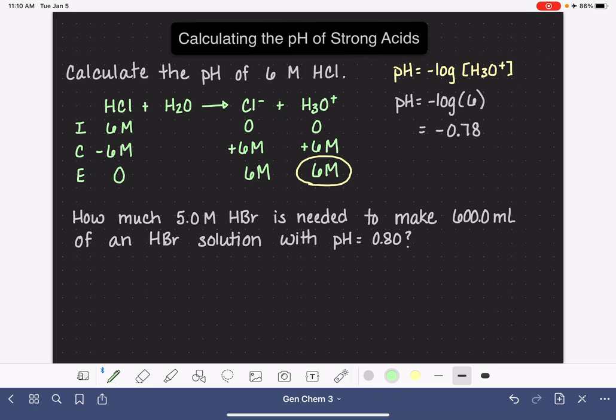First of all, remember the dilution equation, M1V1 equals M2V2. This is one of those equations that students tend to forget, but it's really important. Our initial molarity is 5.0, the 600 milliliters is our final volume. We know that our initial molarity is 5.0.